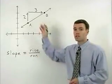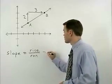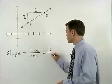So the slope of this line, or its rise over run, is two over three.